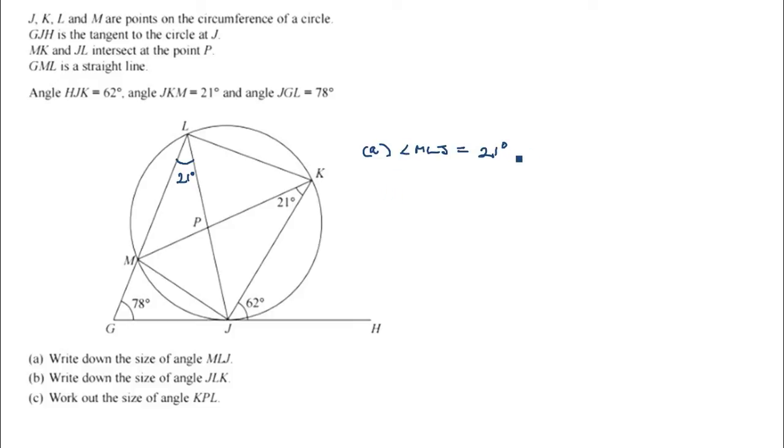OK, so most students got that right, but they stumbled over part B. Let's have a look at part B. So part B, it says write down the size of angle JLK. So we've got angle JLK. And so JLK is this angle here. Now again, it says write down the angle. So we should be able to just look at that and see one of those patterns that we're familiar with from the circle theorems. And then we should, without any working out, be able to write the angle down.